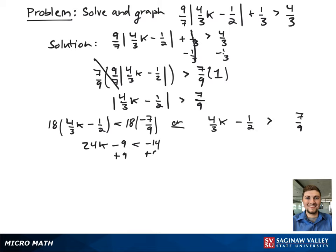Next, we're going to add 9 to both sides to get rid of the single term, giving 24k is less than negative 5, and then to get k by itself, we're going to divide both sides by 24, and this results in k is less than negative 5 over 24.